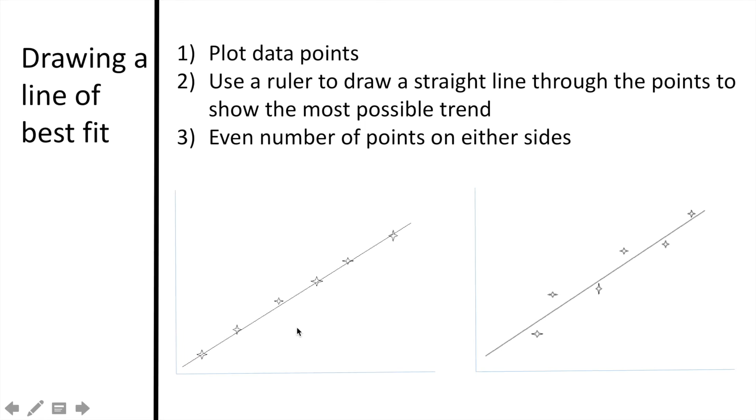In the graph on the left, the points form almost a perfect straight line, and in this case, this is a perfect positive correlation. Choosing the two farthest points, we then draw a line that connects these two. Notice how there isn't an even amount of points on either side of the line, but the line is touching most of the points.